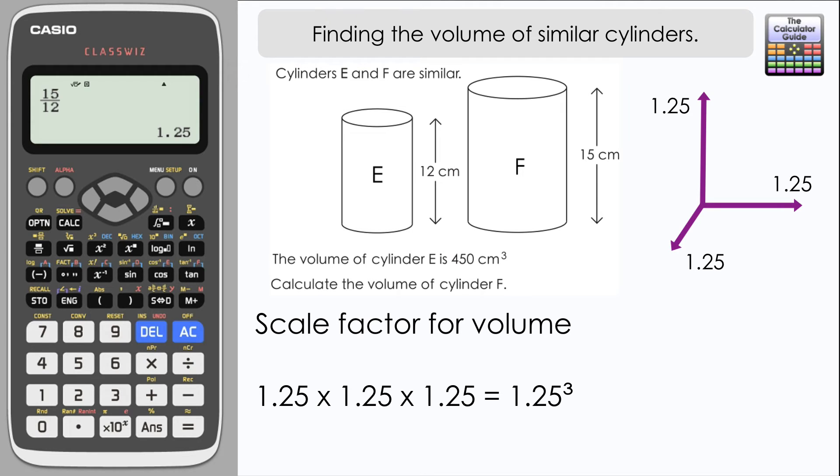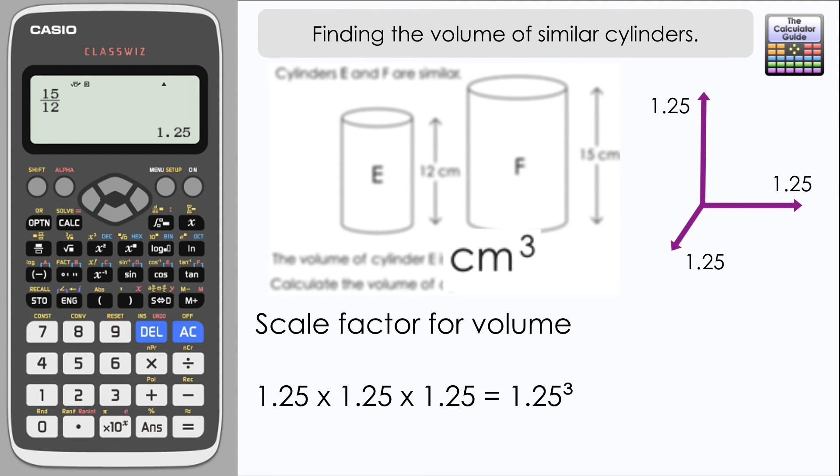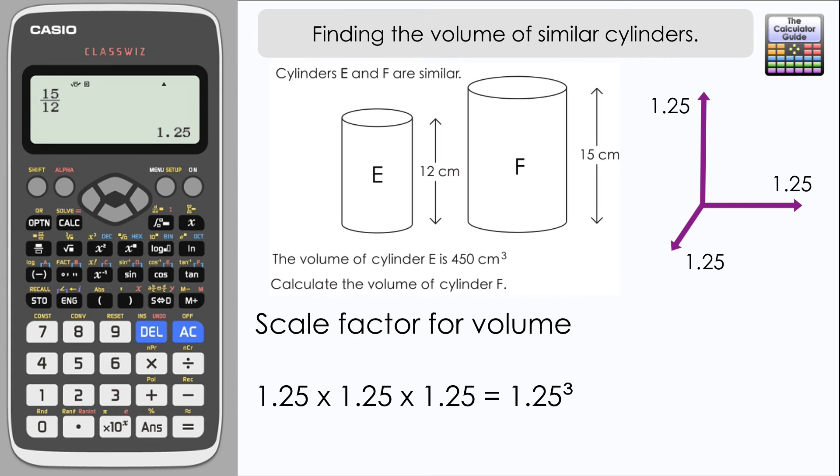The volume of enlarged cylinder F is going to be 1.25 cubed times the volume of cylinder E. And if we just check, we've got a three-dimensional shape. Check the units where the units are in centimeters cubed, so we'd expect the scale factor to be a cubic scale factor for this particular enlargement.